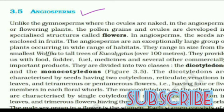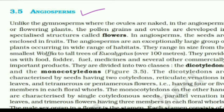The biggest difference between gymnosperms and angiosperms is that gymnosperms don't have flowers. Unlike gymnosperms where the ovules are naked — there was no extra shielding on them — in angiosperms or flowering plants, the pollen grains and ovules are developed in a specialized structure called flowers. So all the pollen grains and ovules will be inside the flowers.